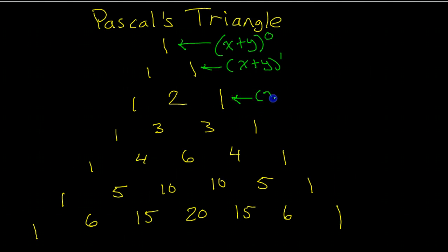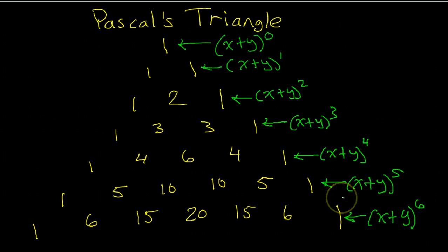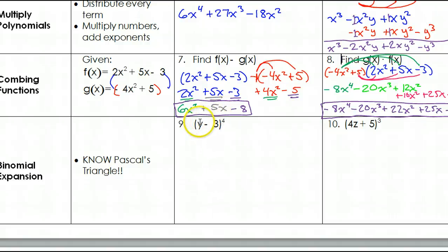So, these would be the coefficients of a binomial to the second power. Binomial to the third power. Binomial to the fourth power. To the fifth power. To the sixth power. And I could keep on going from there as long as I needed to.